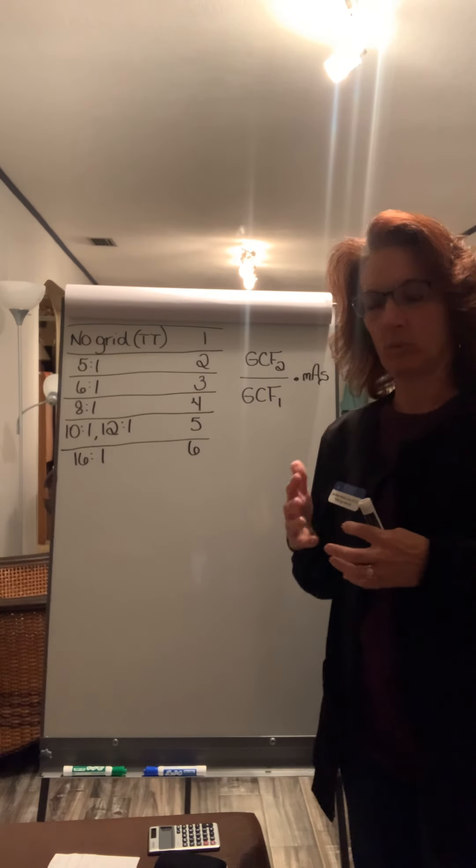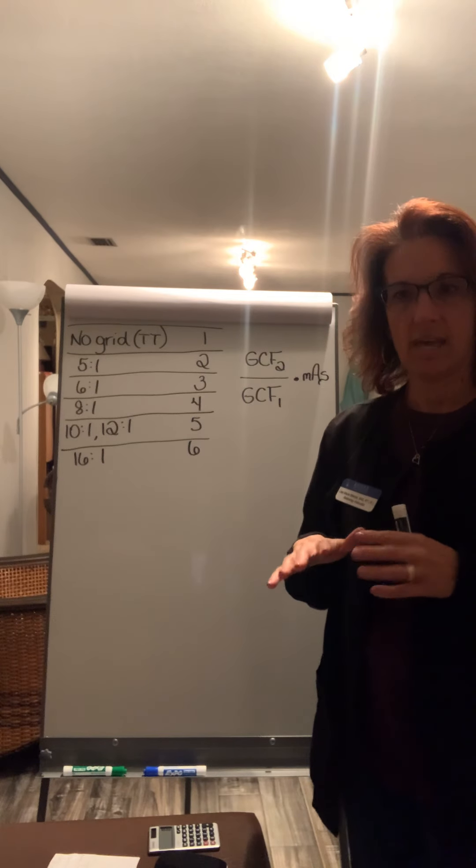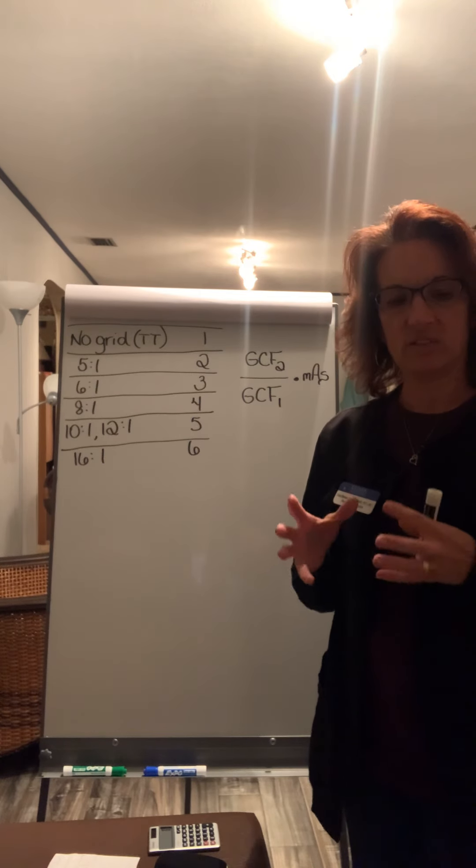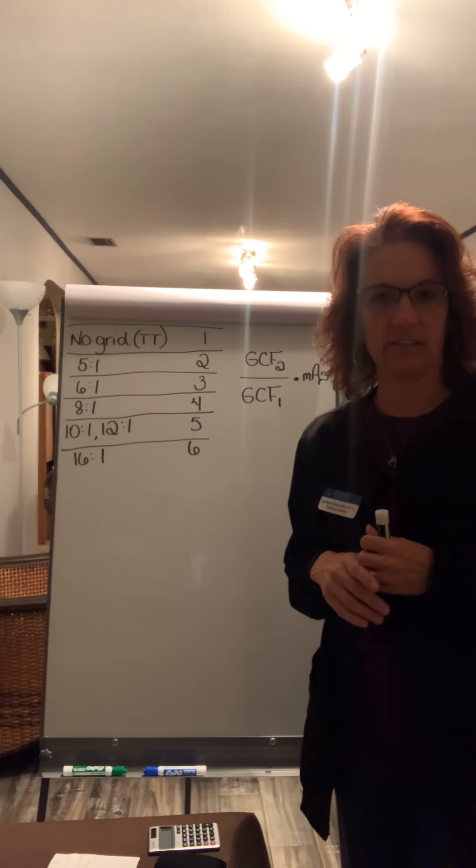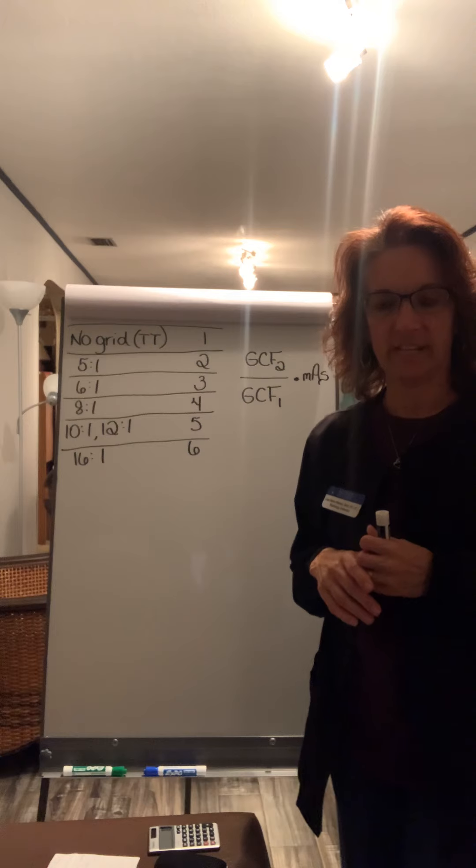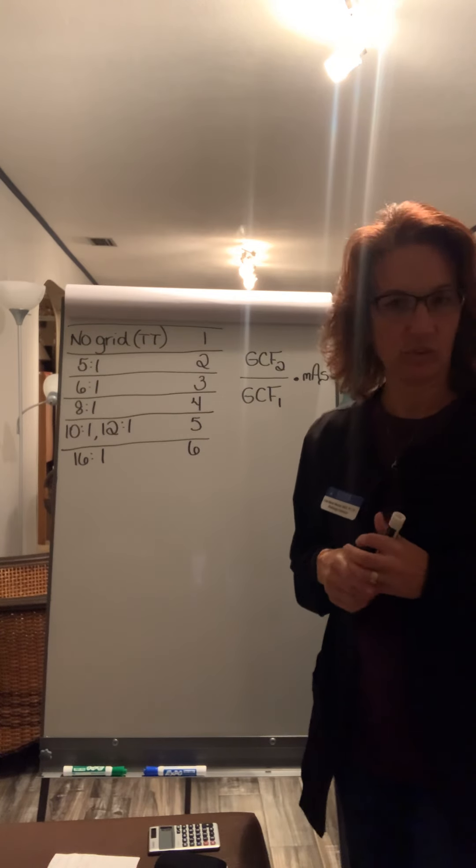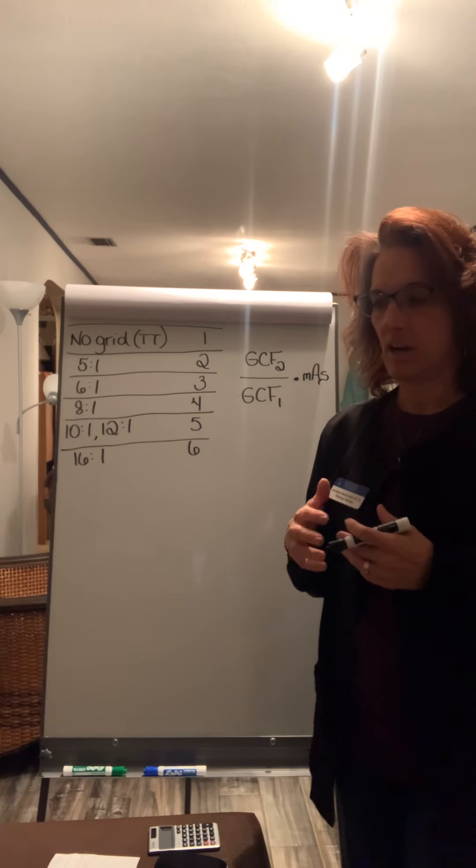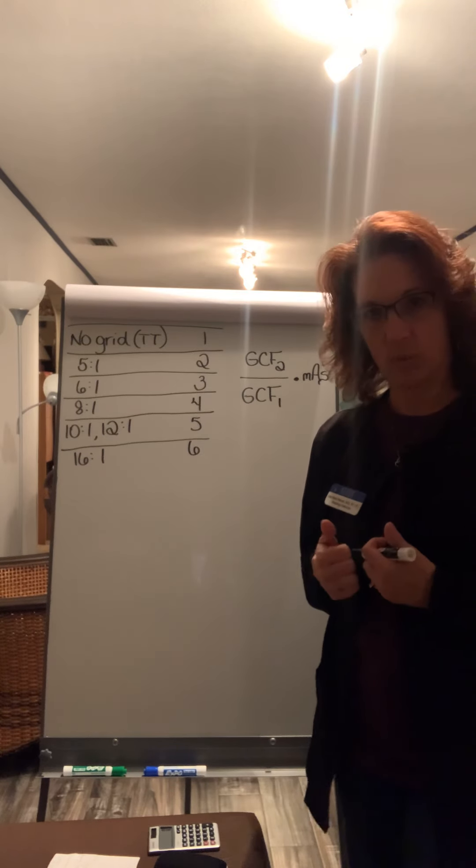Now remember that a grid is placed between the patient and the image receptor and the whole purpose of a grid is to absorb scatter radiation to keep it from striking the image receptor and creating radiation fog on our image. There's nothing useful about scatter radiation. It doesn't do anything to help our image. It only takes away from our image.